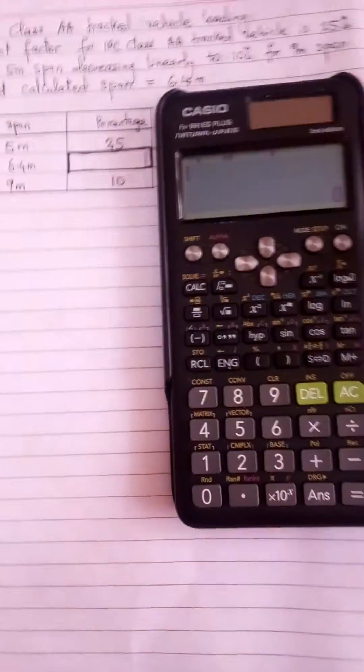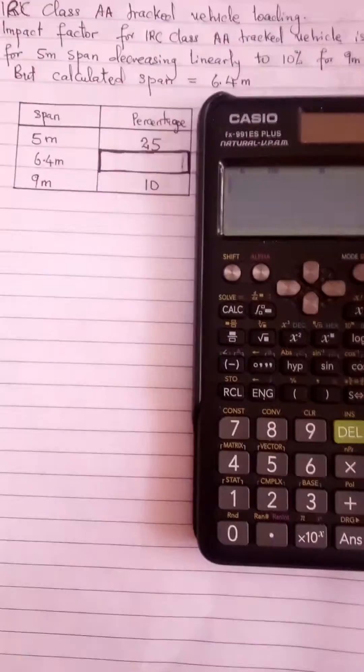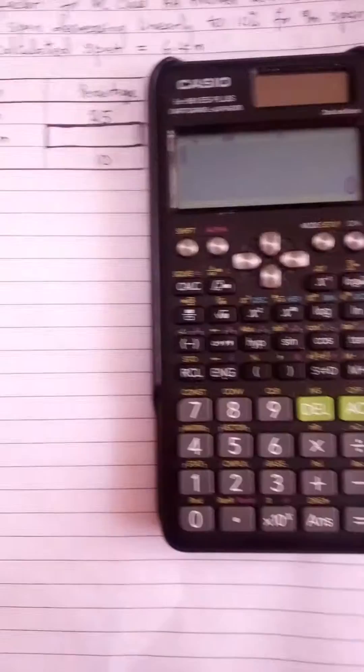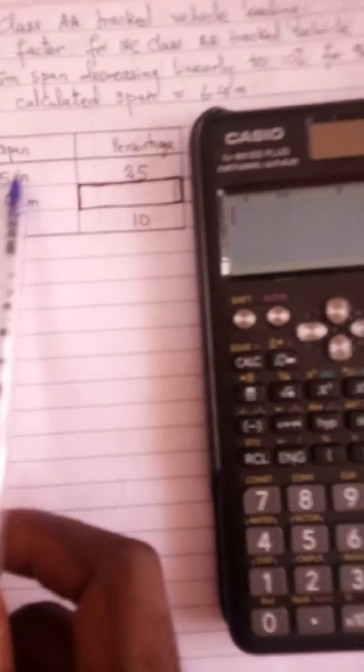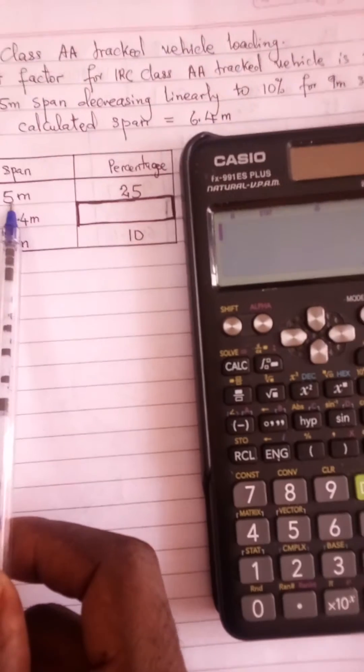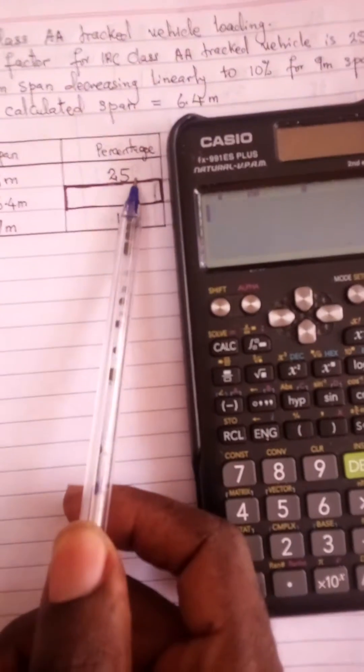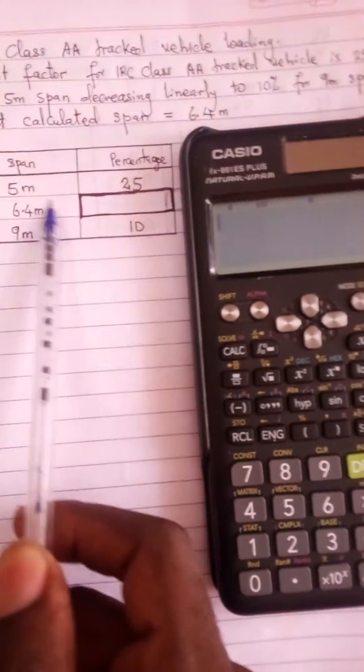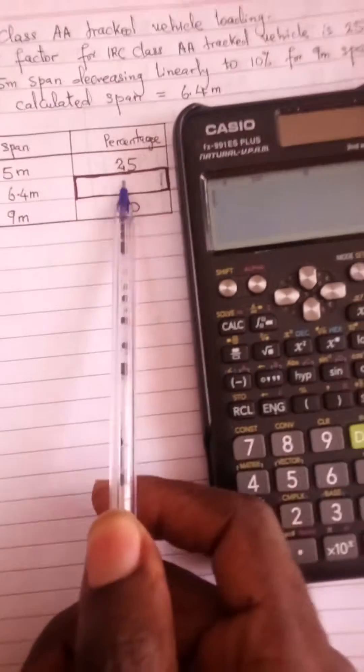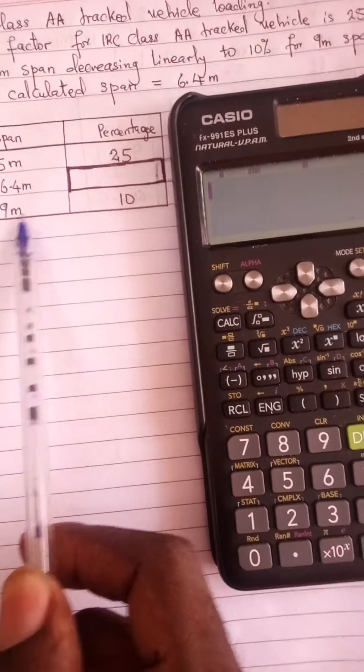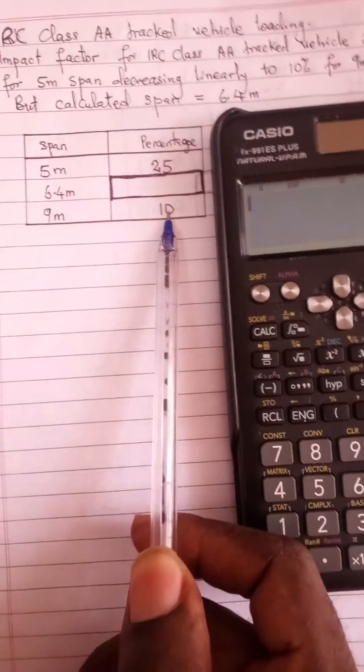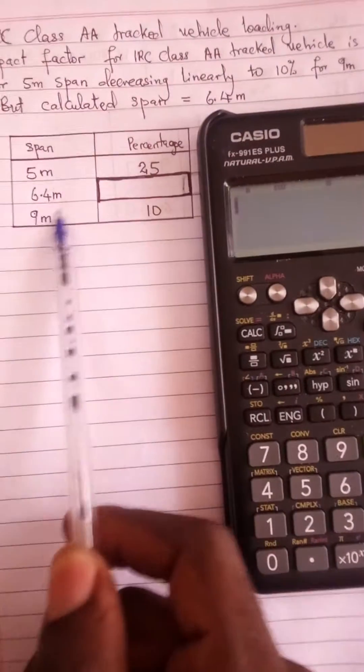First of all, I formed this table from the statement: for span 5 meters the percentage is 25, for span 6.4 which I have I don't know the percentage, but for 9 meters the percentage is 10. So how do I now get the percentage for 6.4 meters?